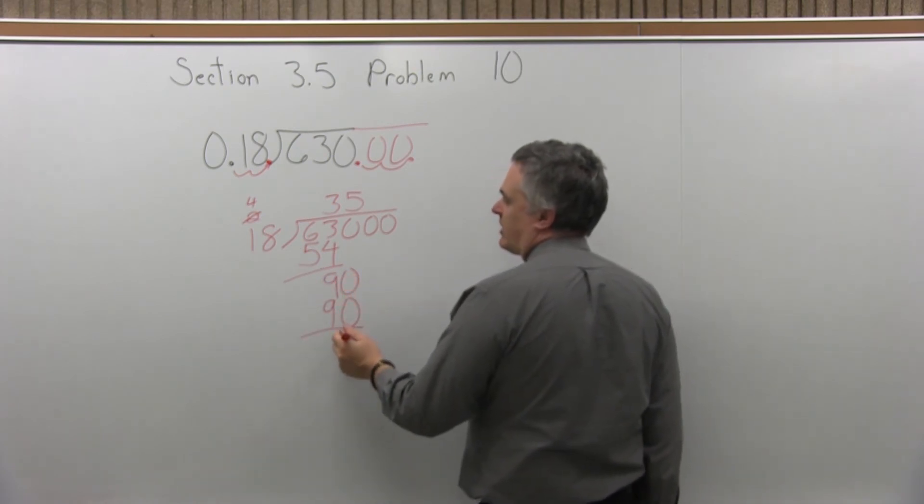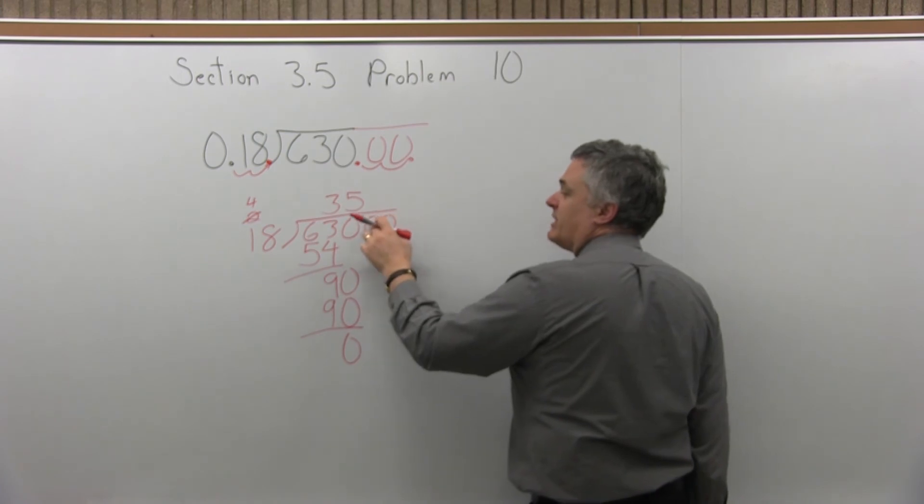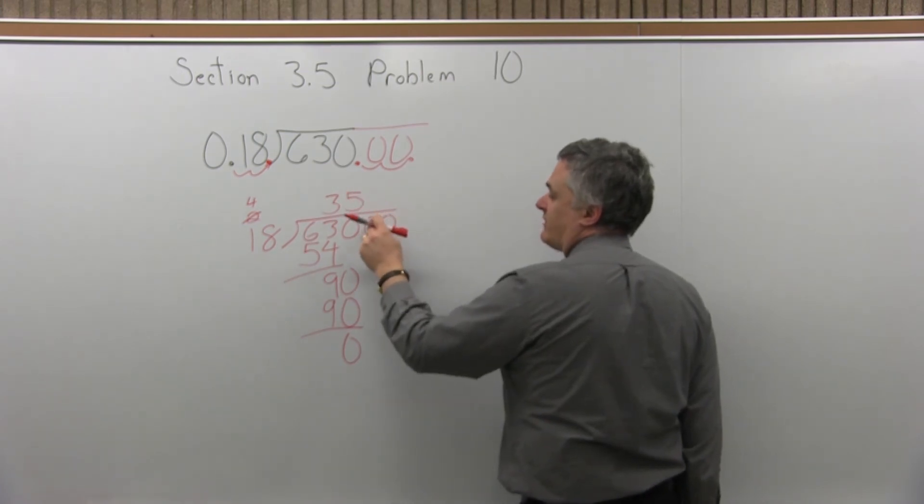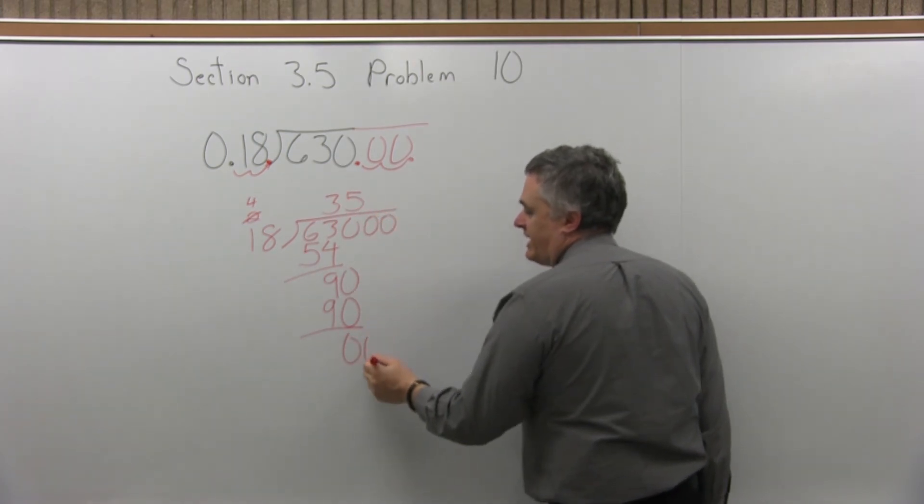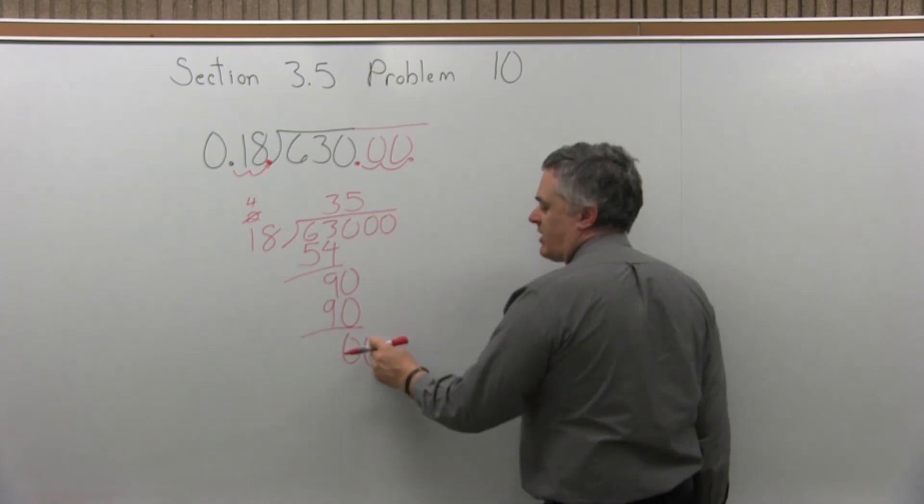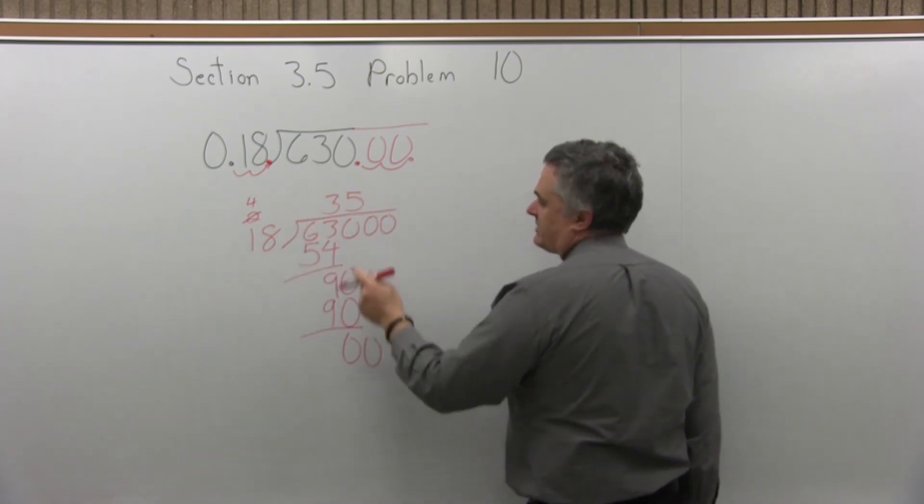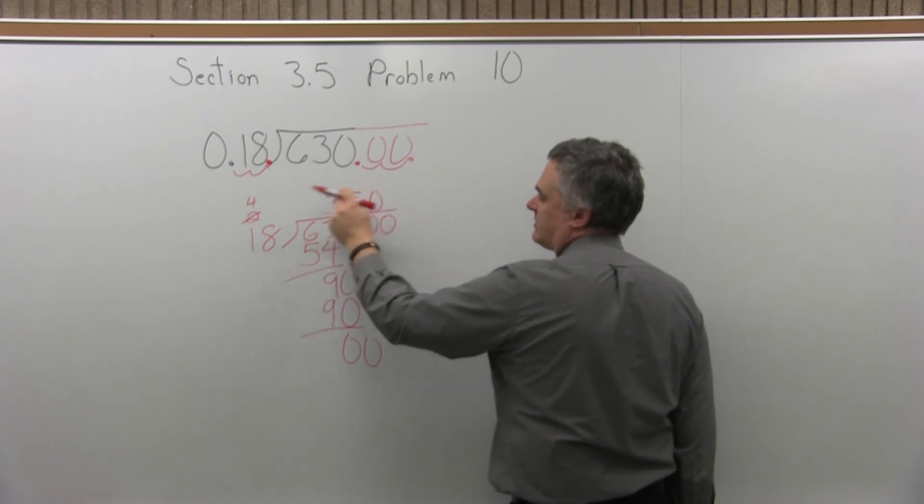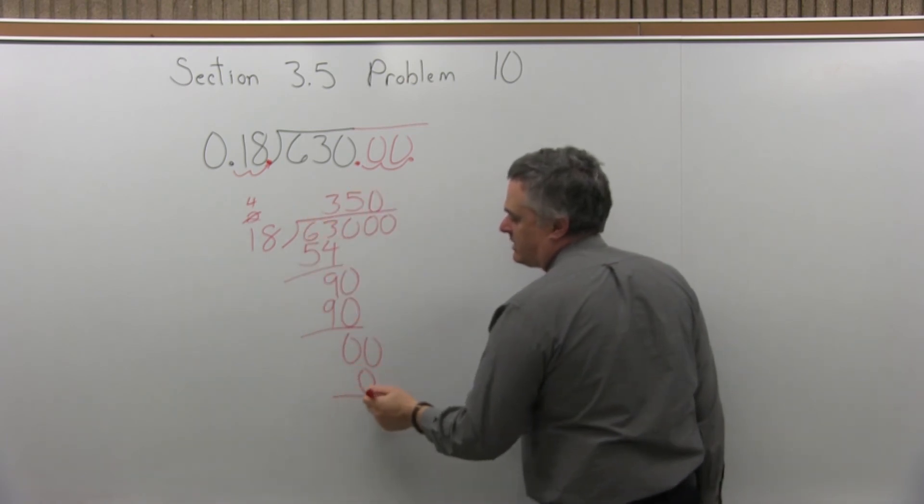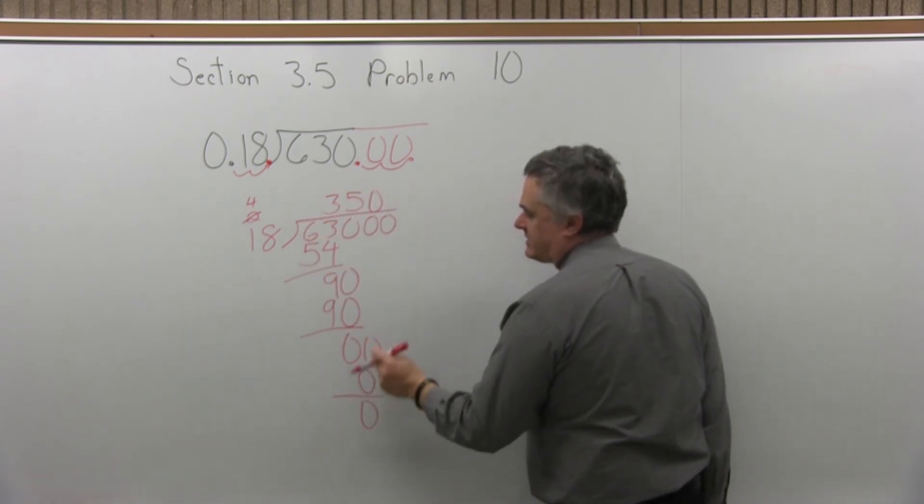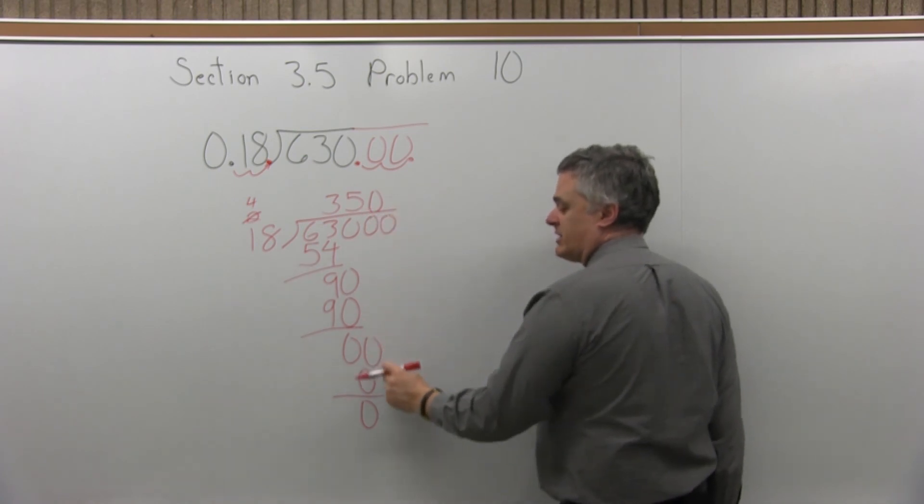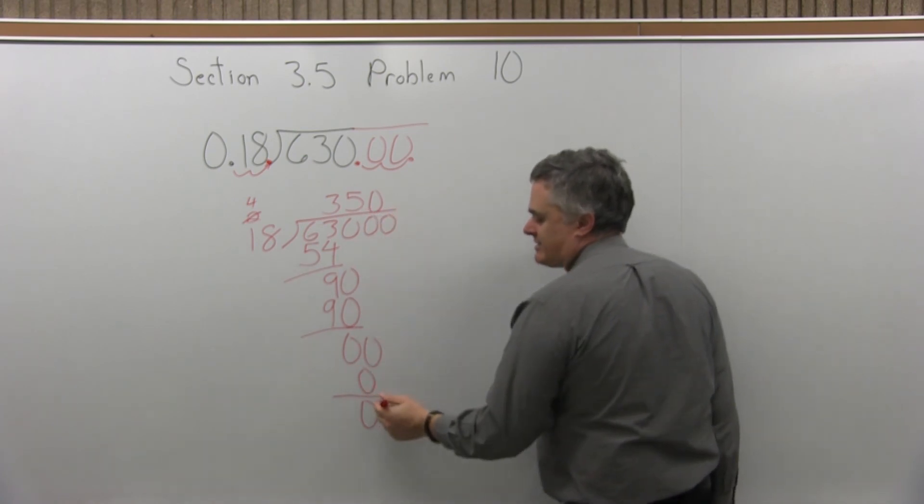90 minus 90 is 0. Now we're not done yet because we had to put in those other 0s. The answer is not 35. If I bring down the next digit to the right, which is a 0, something times 18 will fit into 0. 0 times 18 is 0. I do 0 minus 0, I get 0. And there's still another 0 to bring down.